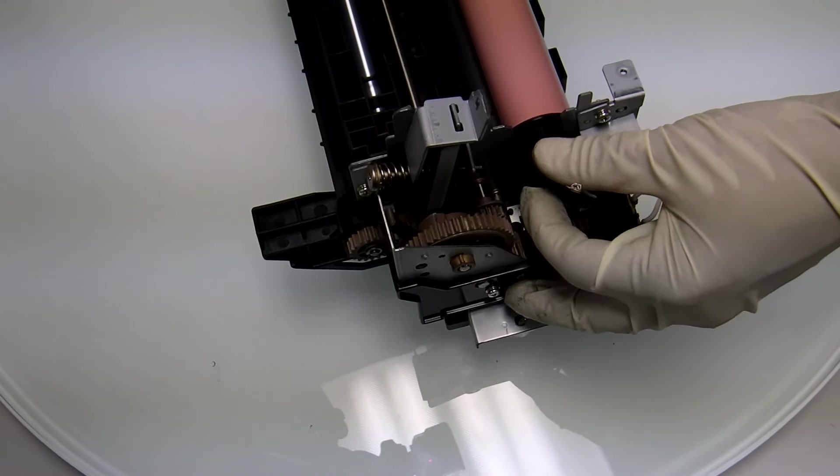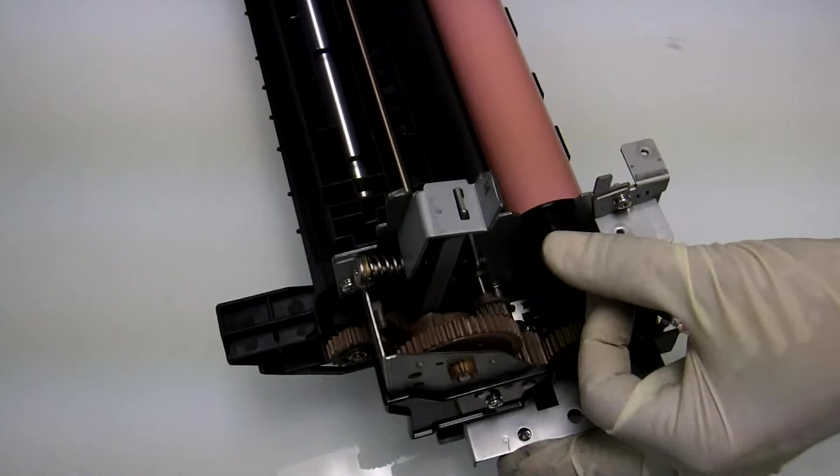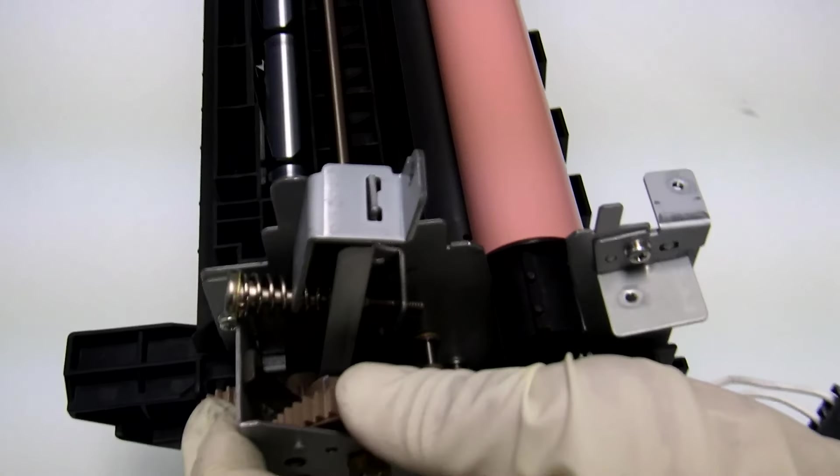Once you have put the film assembly in place, you can rotate the pressure roll gear and everything should rotate smoothly.